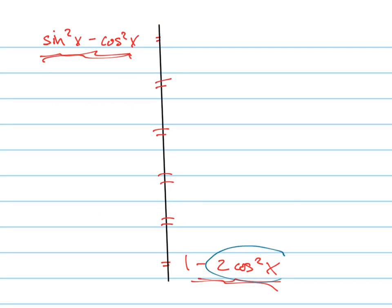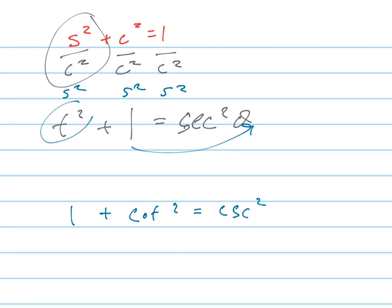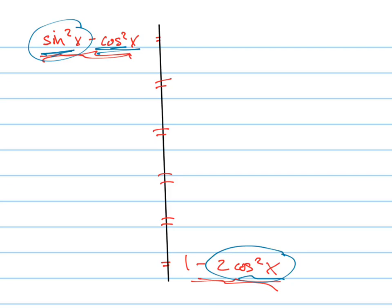The first thing I'm going to do is recognize that I want cosine squared in my answer, so I want to change the sine term. What does sine squared equal? If I move things to the other side: sine squared equals one minus cosine squared. So let's write this as one minus cosine squared of x. I did a little color coding so you can see what I substituted — I substituted one minus cosine squared for sine squared.